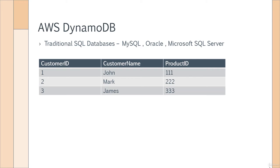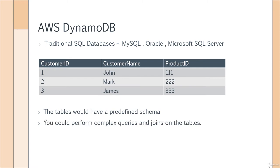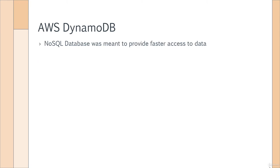In these traditional SQL databases, you would have a table, it would have columns, and you would have rows — a very typical table shown here. The tables would have a predefined schema. This table has three columns: the customer ID, the customer name, and the product ID. Then you have the rows which have the values for the columns. You could perform complex queries or even joins on other tables — everybody would be familiar with working with such databases.